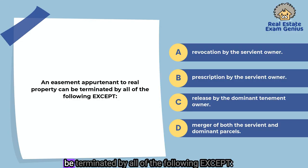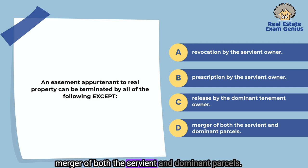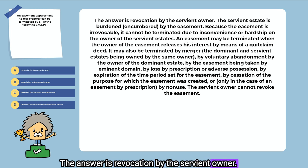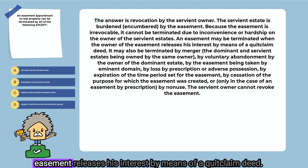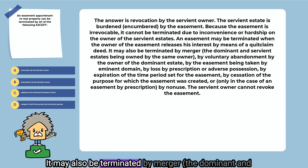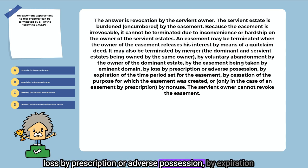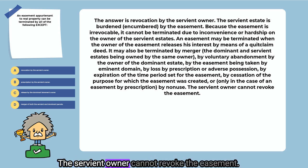An easement appurtenant to real property can be terminated by all of the following except: revocation by the servient owner, prescription by the servient owner, release by the dominant tenement owner, or merger of both the servient and dominant parcels. The answer is revocation by the servient owner. The servient estate is burdened by the easement. Because the easement is irrevocable, it cannot be terminated due to inconvenience or hardship on the owner of the servient estate. An easement may be terminated by merger, voluntary abandonment by the owner of the dominant estate, eminent domain, prescription, expiration, cessation of purpose, or non-use. The servient owner cannot revoke the easement.